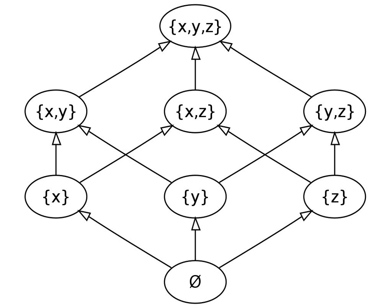For example, the power set of a set with three elements has: C(3,0) = 1 subset with zero elements, the empty subset; C(3,1) = 3 subsets with one element, the singleton subsets; C(3,2) = 3 subsets with two elements, the complements of the singleton subsets; and C(3,3) = 1 subset with three elements, the original set itself.